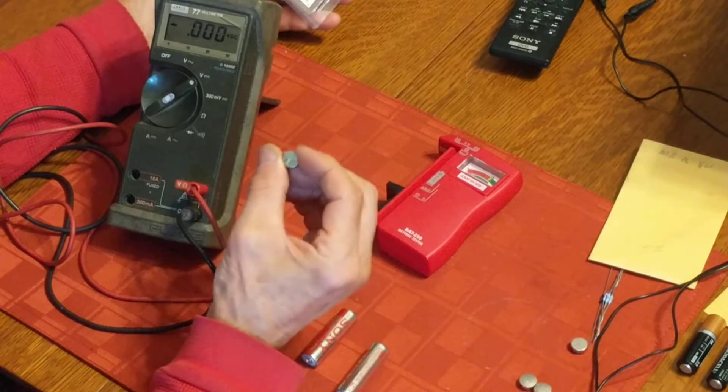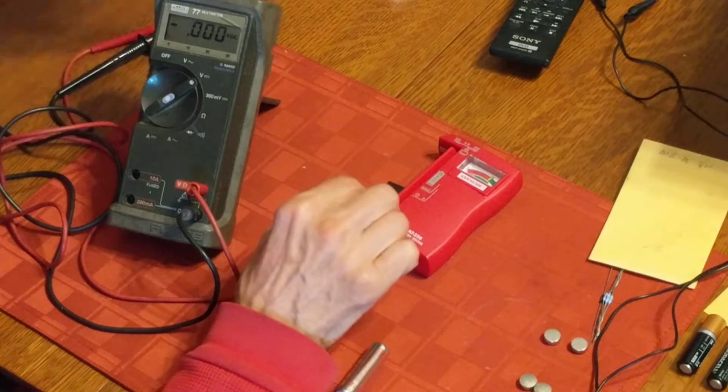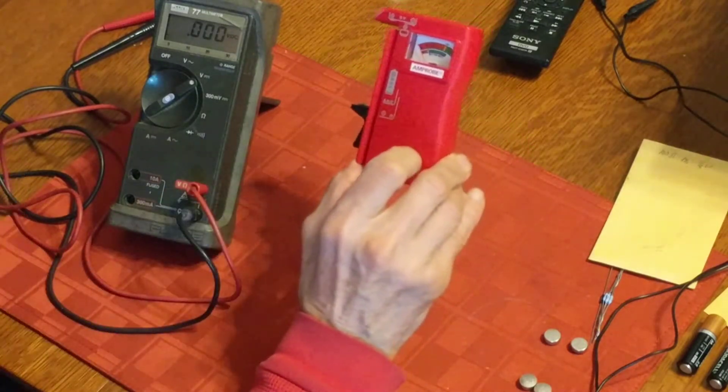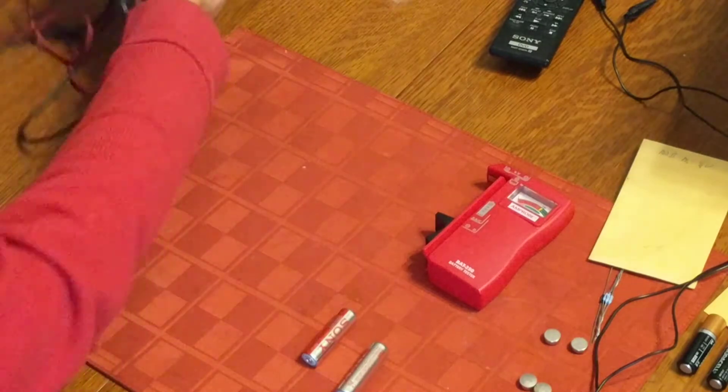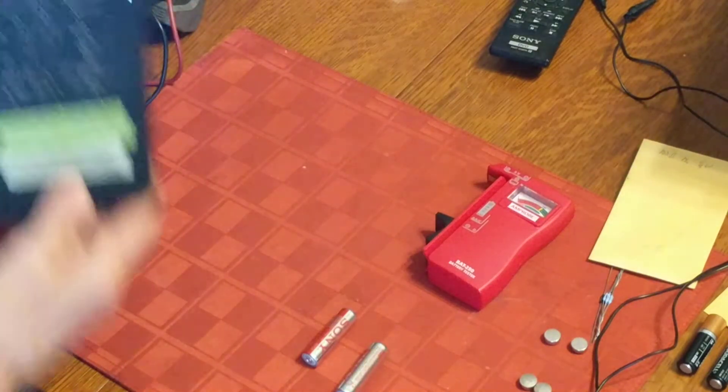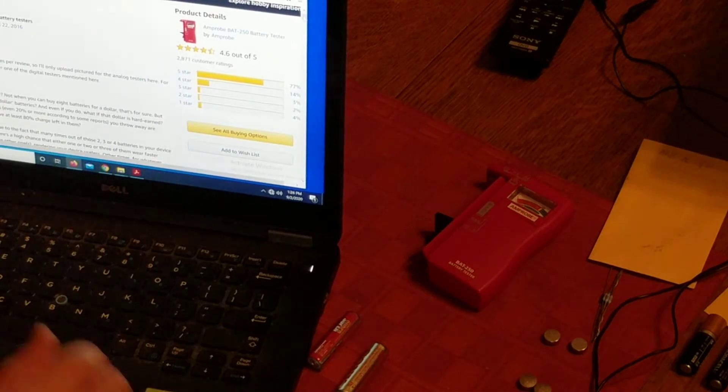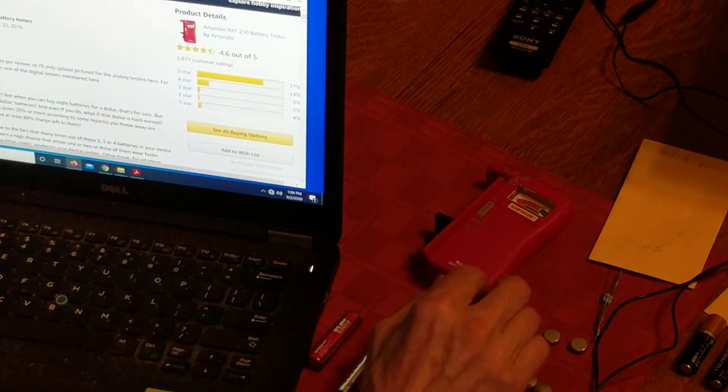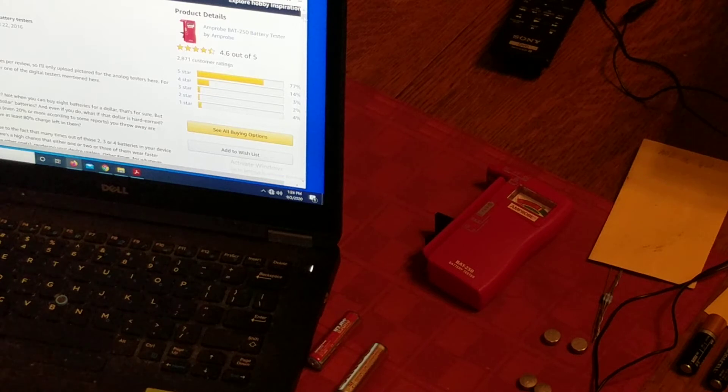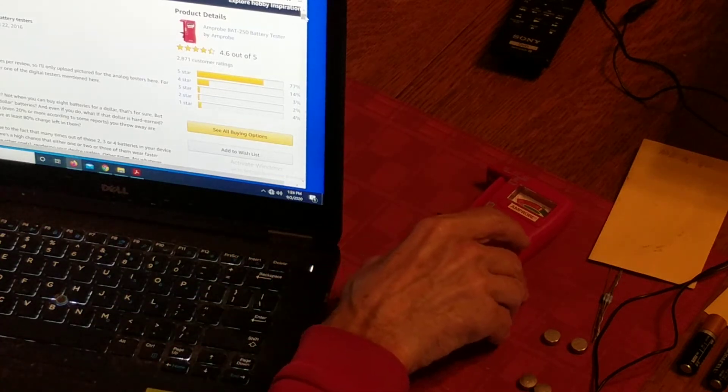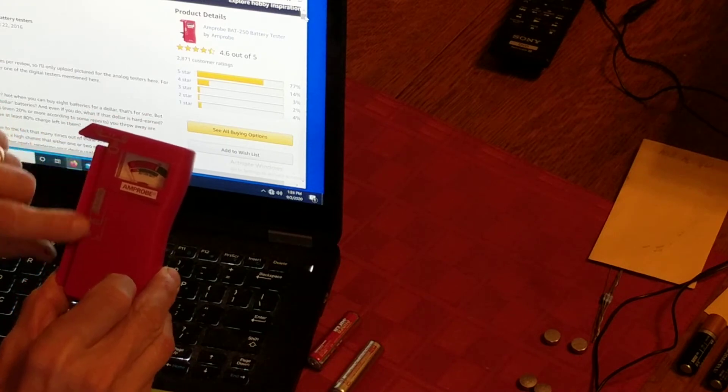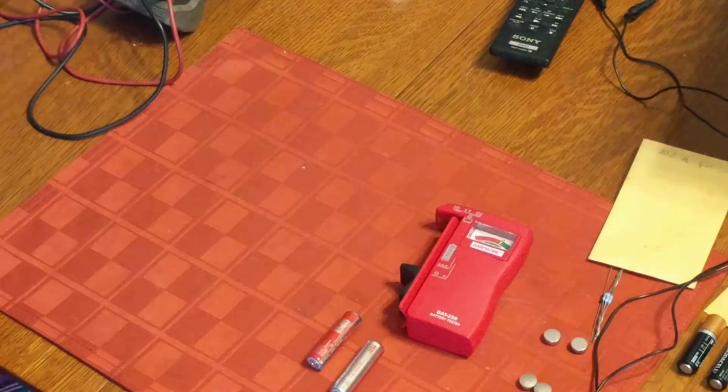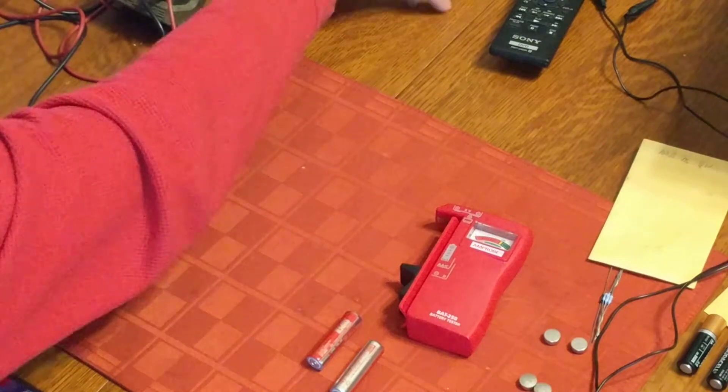The reason was because I wanted to use it for testing some button batteries also 1.5 volts. When I checked the review online on Amazon for this more carefully, I did find one reviewer who did a comparison of 13 different battery testers comparing them all to each other and the BAT-250. He pointed out that the BAT-250 only uses one load resistance for all of the different battery types, so it's using four ohms of load resistance even on a button battery.